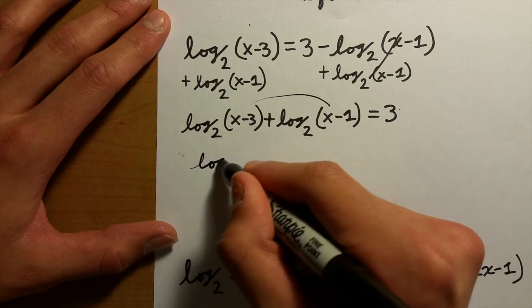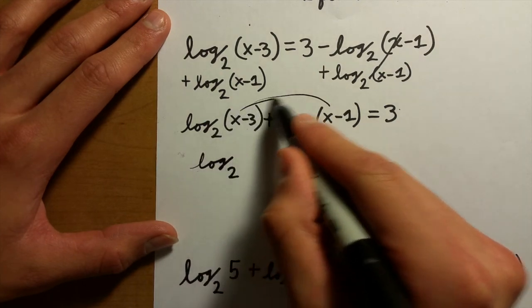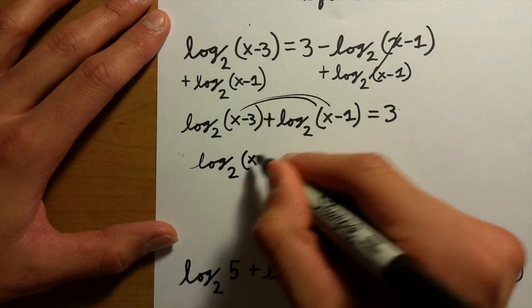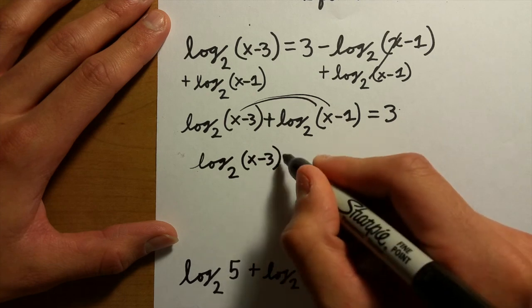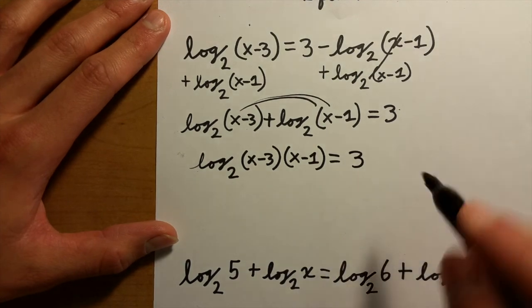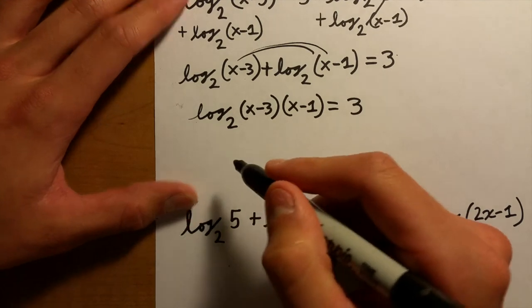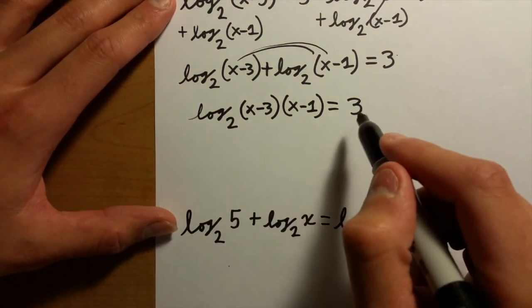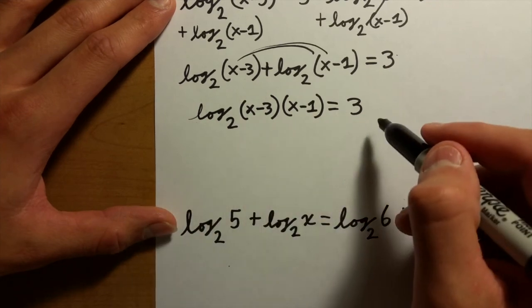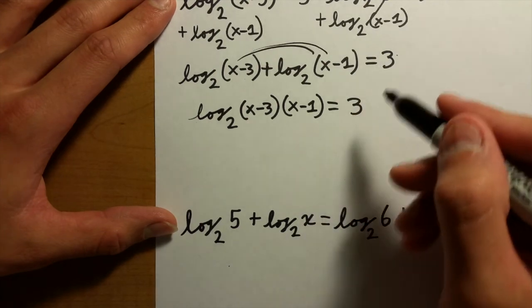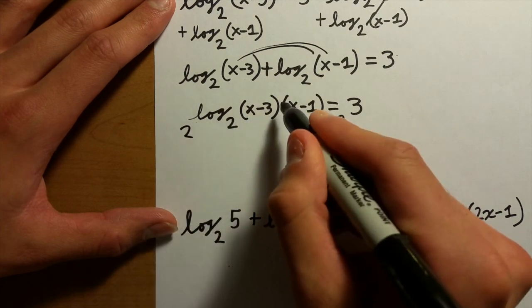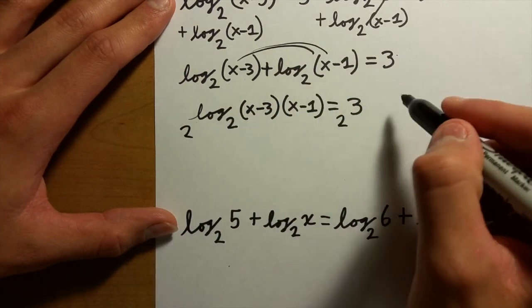It's going to be log₂((x-3)(x-1)), or actually we should just keep it as this for now because we're going to eventually cancel out the logs. Once you're in this format, what you want to do is raise both sides, or essentially give everything a base of 2. So you can do 2³ and 2^(log₂(...)) because you're doing the same thing to both sides, so it's legal.